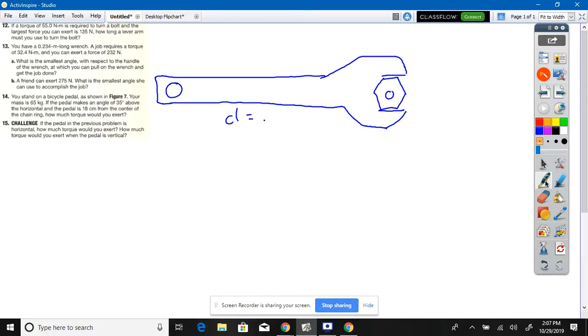Now we know the distance is 0.234 meters. The torque is 32.4 Newton meters and you exert a force somewhere, but what would be the smallest angle that you could exert a force on it? You ever notice when you take lug nuts off a tire, it's always strongest this way? That's because of the sine of theta. So we want to know the minimal angle.